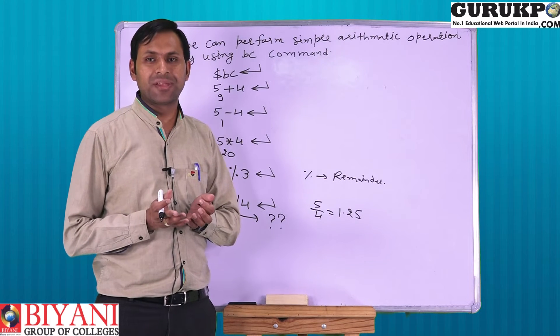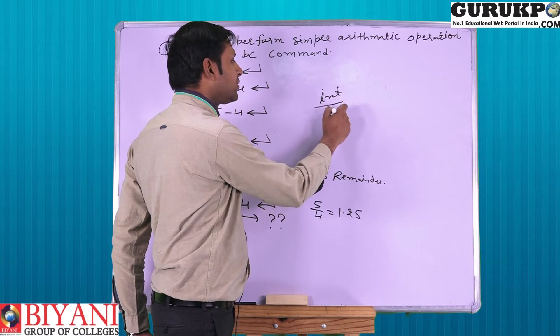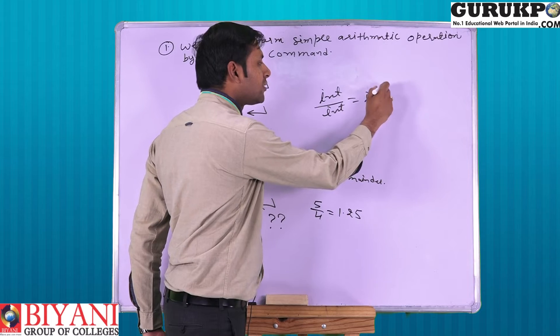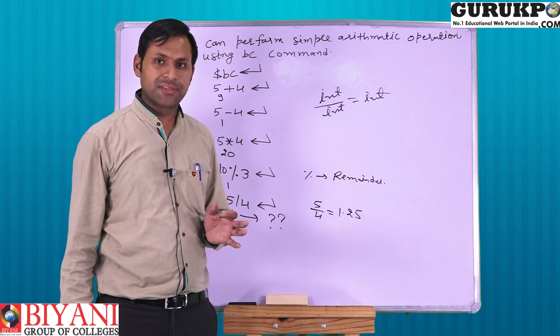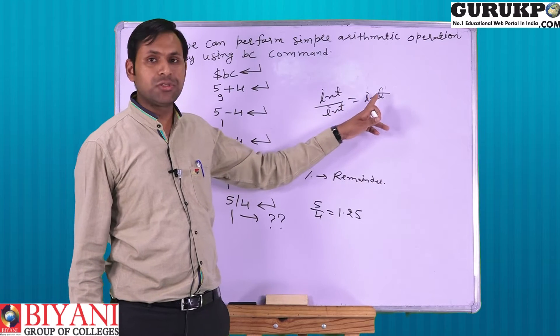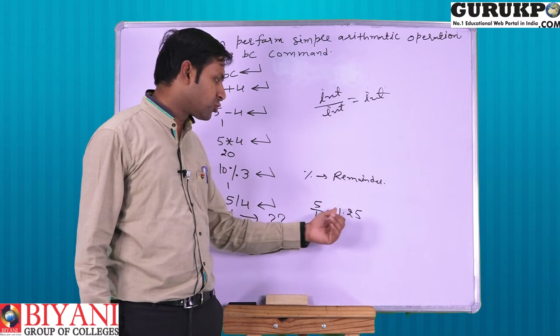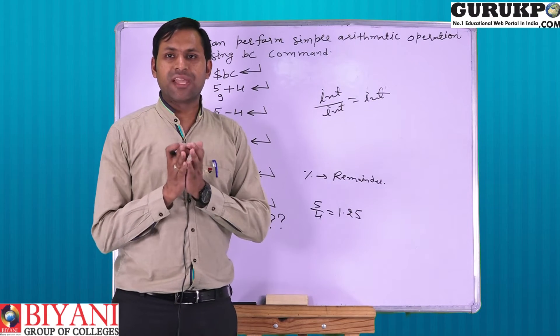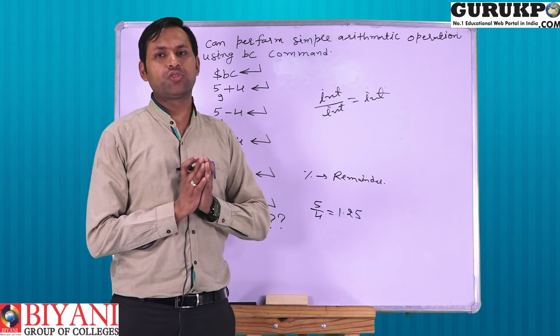The logic is very simple. Like in any other programming language, integer upon integer is equal to integer. This concept is also following Linux. Integer upon integer is equal to integer. Then how we can get actual answer? Actual answer is 1.25.